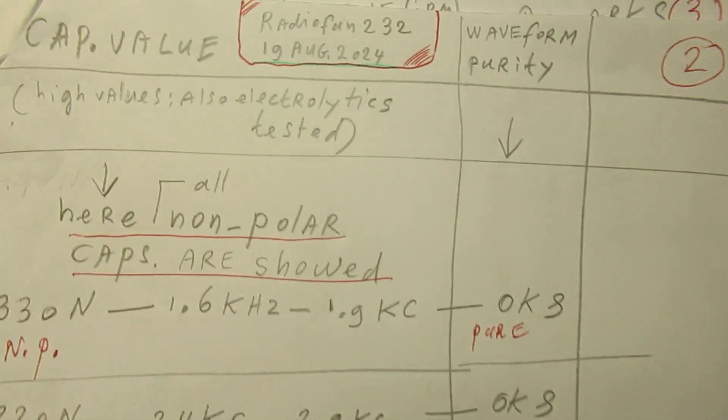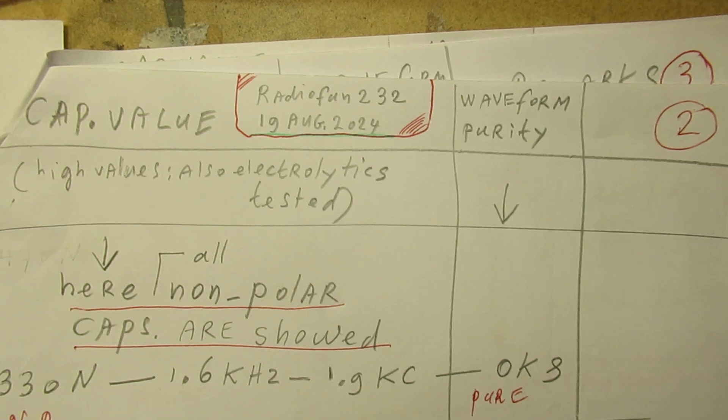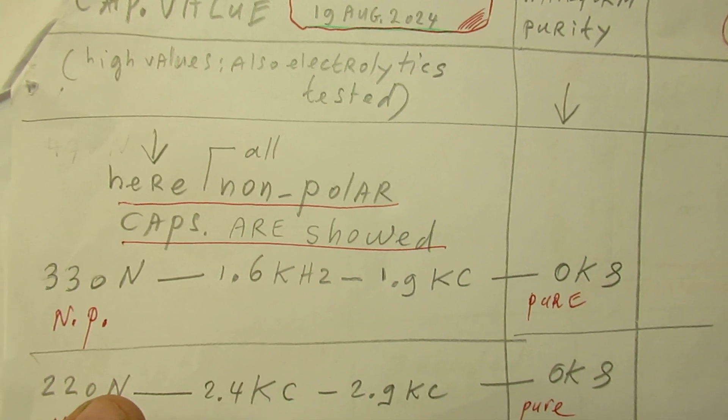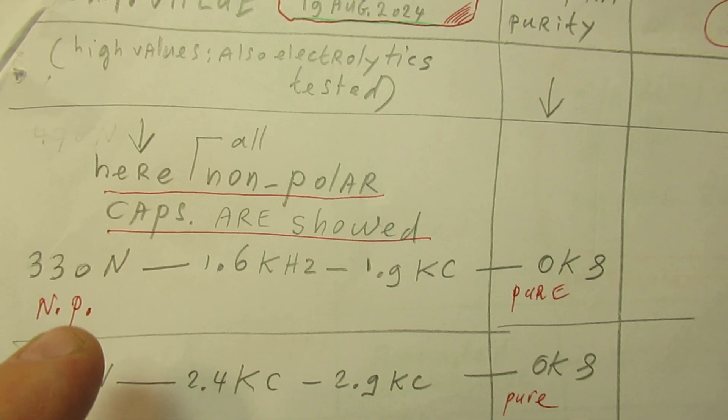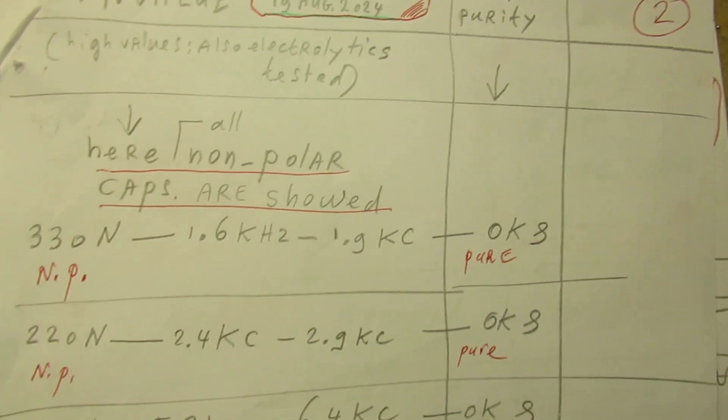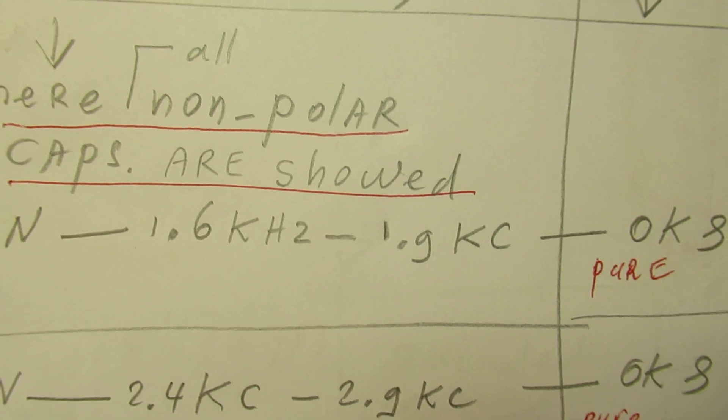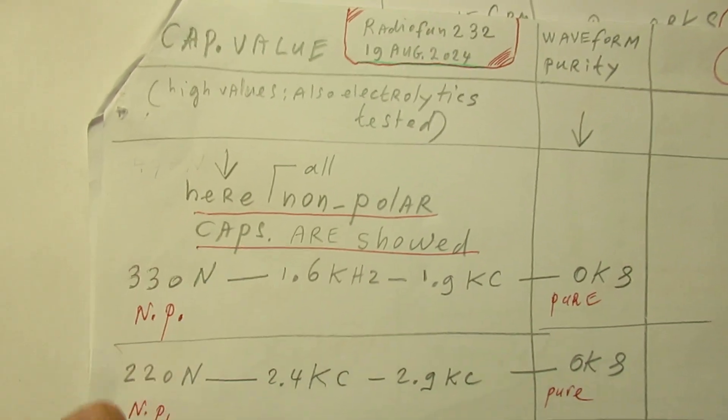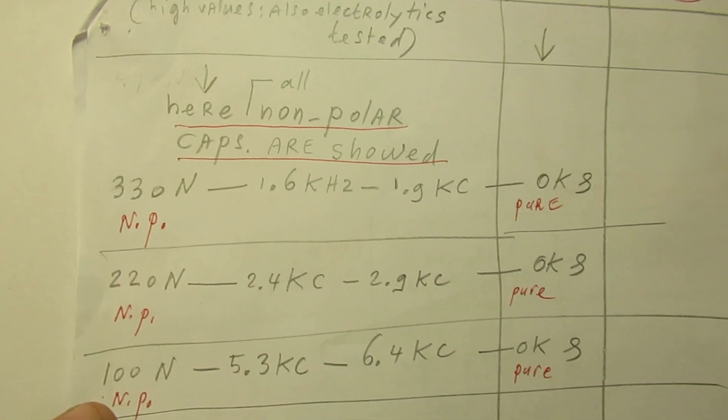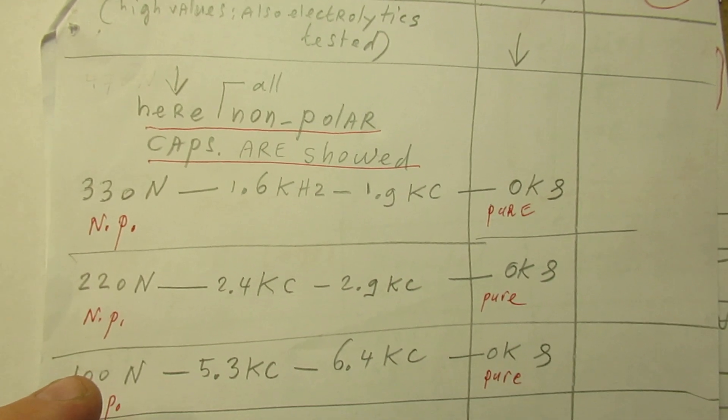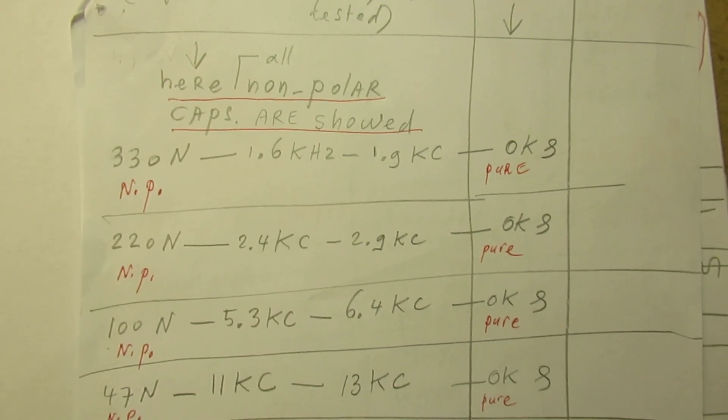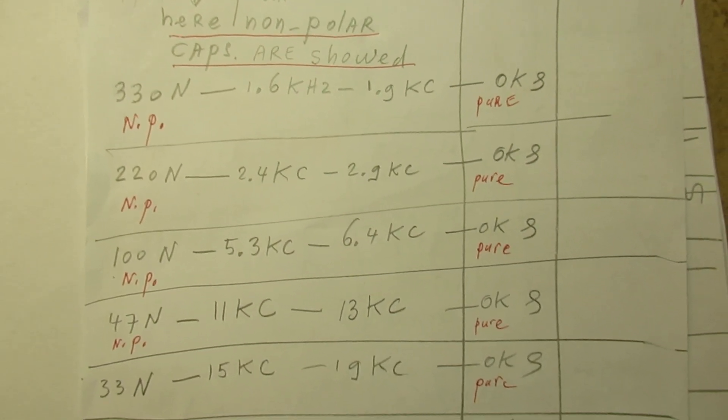Page two of my experiments. Cap value. When you go to higher frequencies, only non-polar capacitors are used. 1.6 kilocycles to 1.9 kilocycles. What you also see here is that the variation in the frequency is not very big, and that is a good sign.